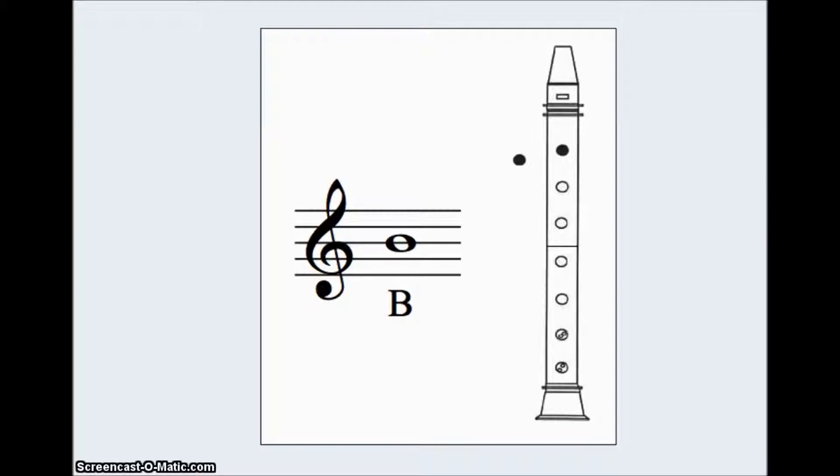The first note that we learned was the note B, and B is on the middle line of the musical staff, the third line. To play it correctly, you put your left pointer covering the first hole on the top, and your left thumb covering the back hole.